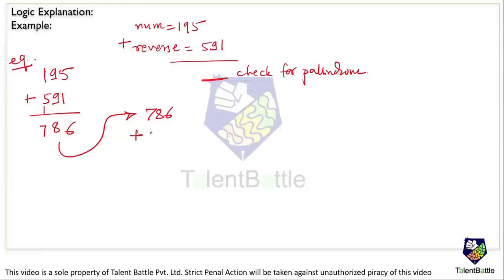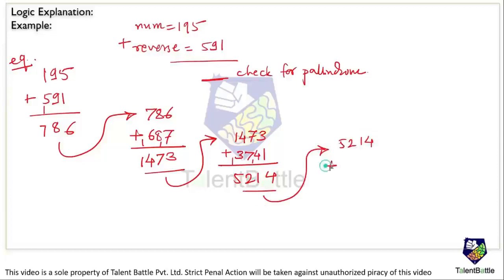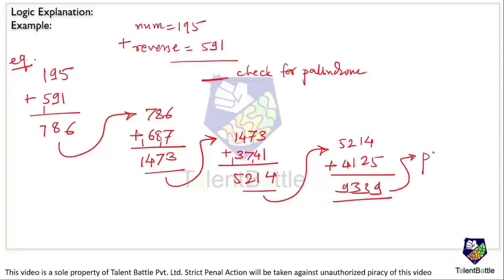The current number becomes 786; adding its reverse 687 gives 1473. Again, 1473 is not a palindrome, so we use it again: 1473 plus its reverse 3741 gives 5214. Still not a palindrome, so we do 5214 plus 4125, which gives 9339. Now 9339 is a palindrome because its reverse is also 9339, so the process stops.